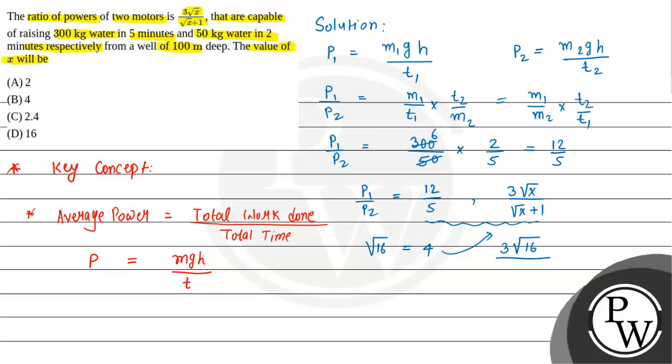This becomes 3 times 4, which is 12, divided by √16 which is 4 plus 1, which is 5. So we're getting the same value. If we compare these, we can say that the value of x will be equal to 16.